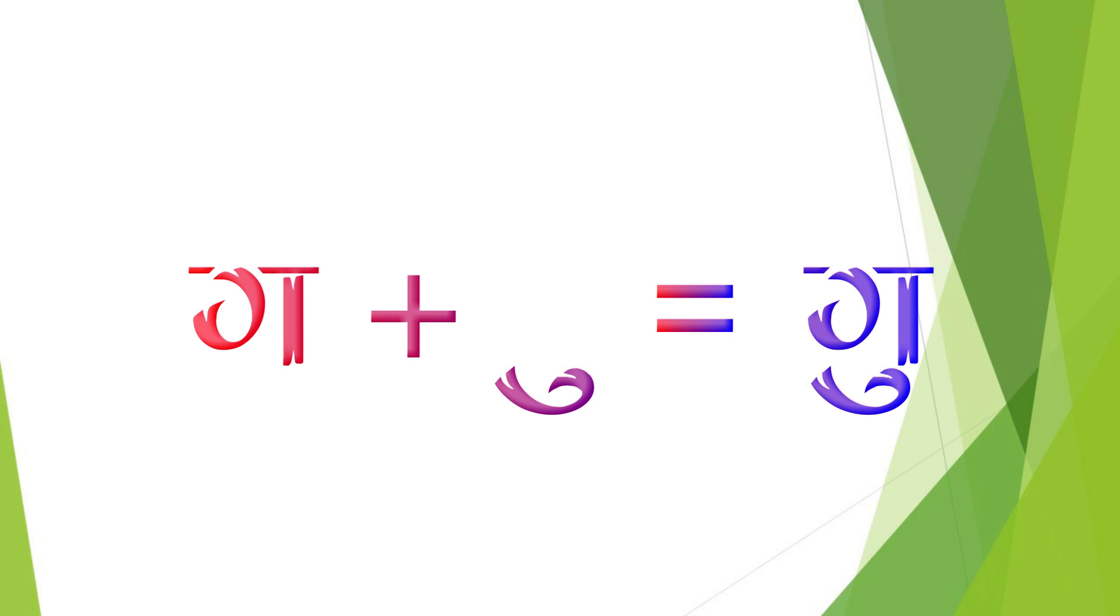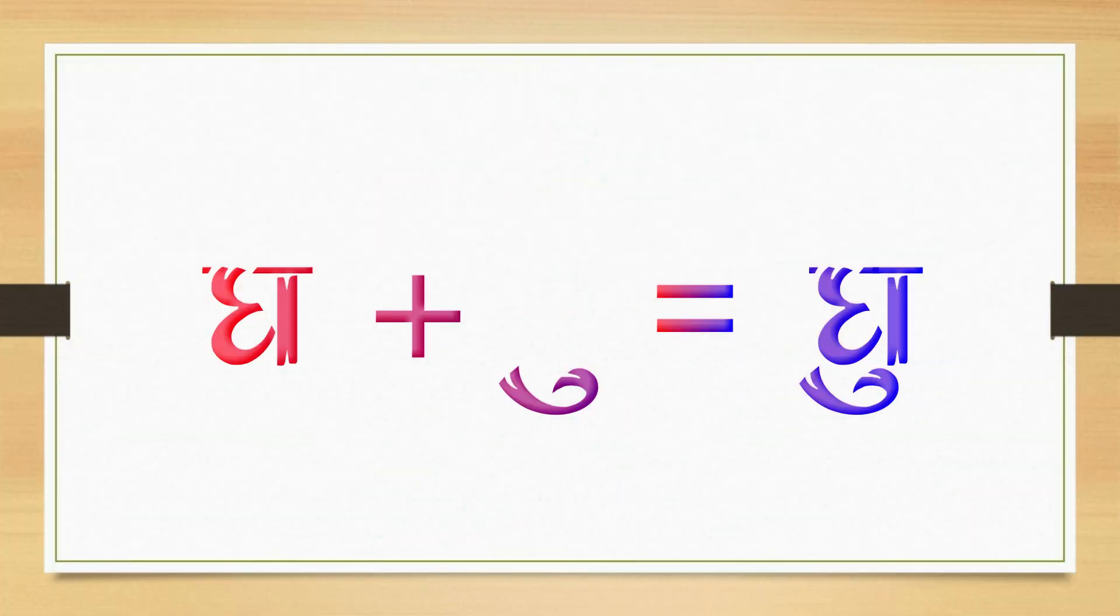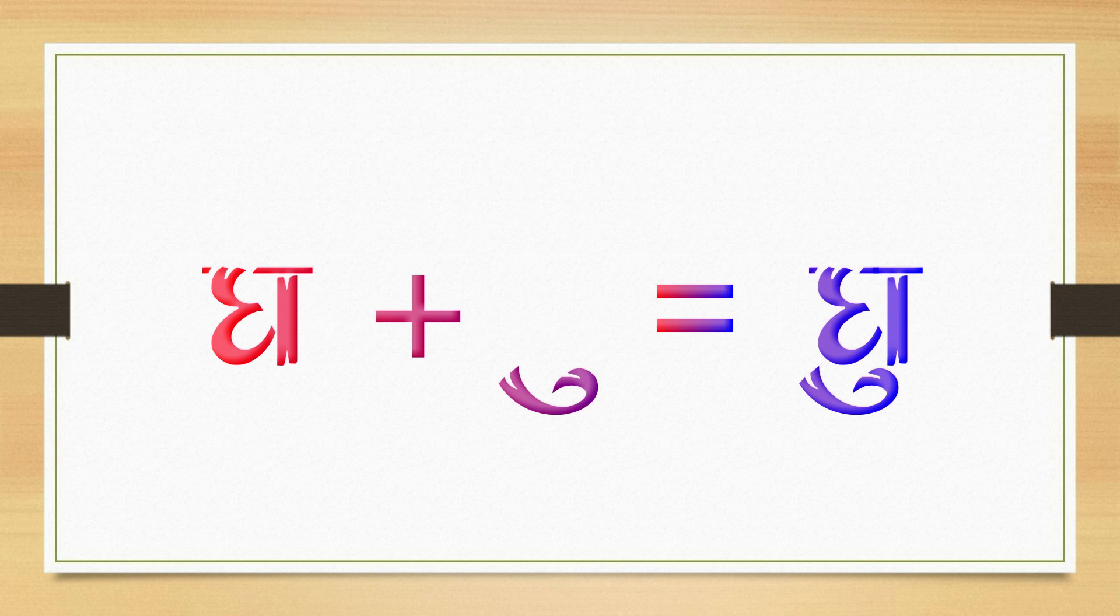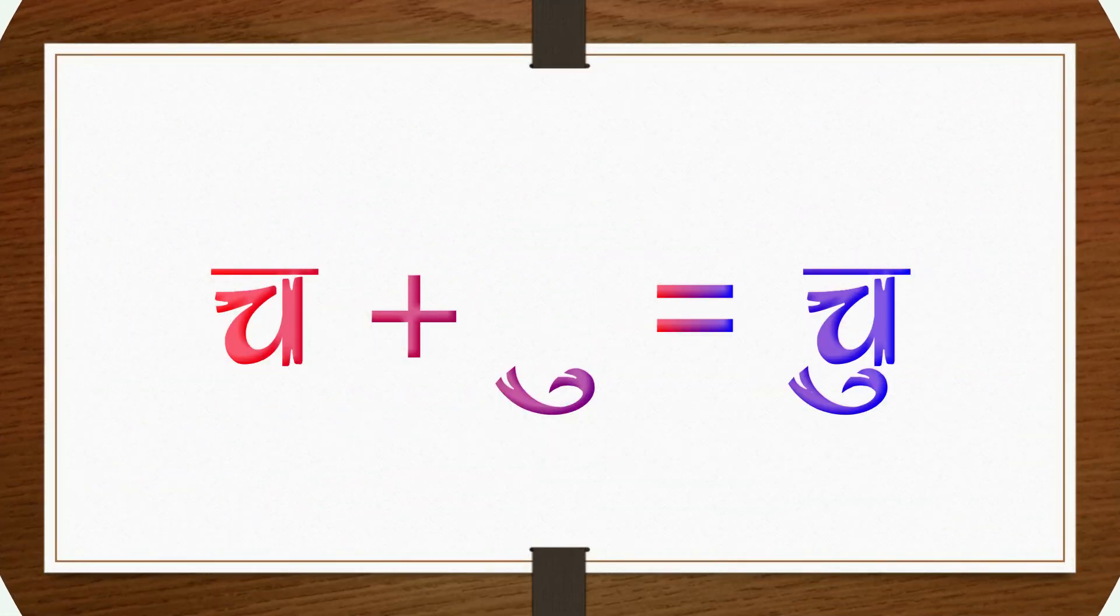Tahanantar g adik raswa ukar gu, g adik raswa ukar barobar gu. Ch adik raswa ukar barobar chu.